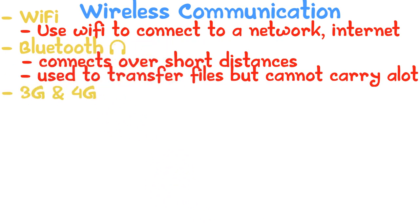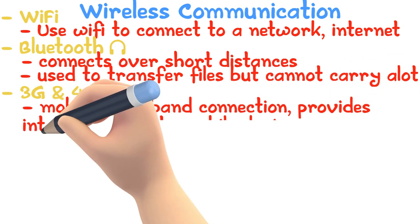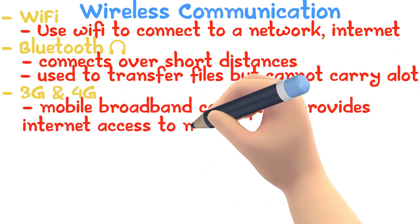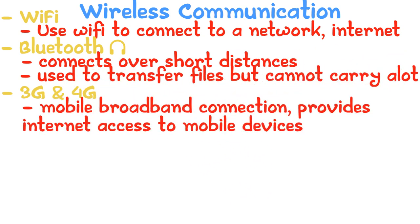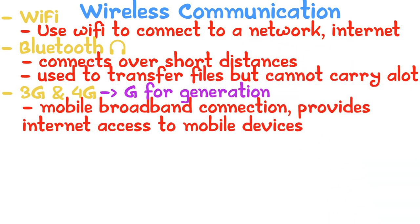3G and 4G is a mobile broadband connection that provides internet access to mobile devices. G stands for generation. At this current time, 5G is the newest generation, which means a higher speed and more availability of signal than the previous generations.